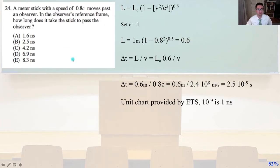Problem 24. A meter stick with a speed of 0.8c moves past an observer. In the observer's reference frame, how long does it take the stick to pass the observer? Again, L equals L0. Length equals the rest length times 1 minus v squared over c squared, that quantity square root. We're going to set c equal to 1. L equals 1 meter. A meter stick. 1 meter times the quantity 1 minus 0.8 squared, that quantity square root. That's going to equal 0.6.